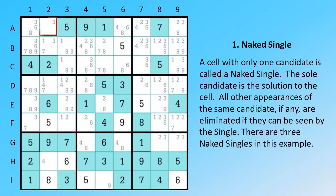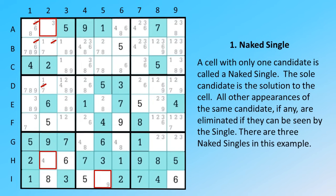A cell with only one candidate is called a naked single. The sole candidate is the solution to the cell. All other appearances of the same candidate, if any, are eliminated if they can be seen by the single. There are 3 naked singles in this example.